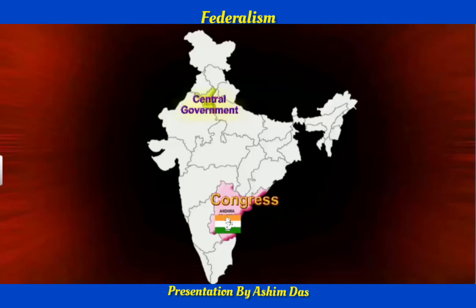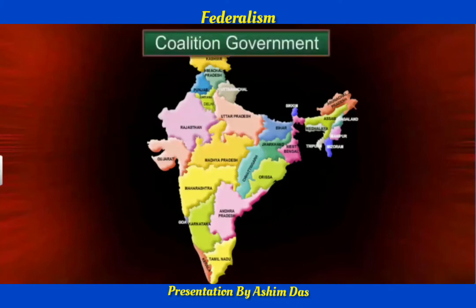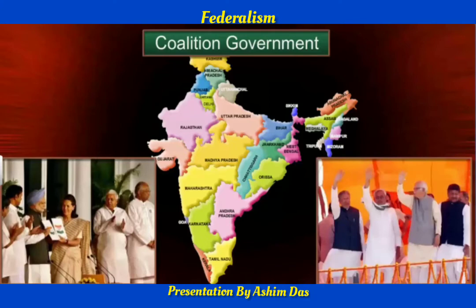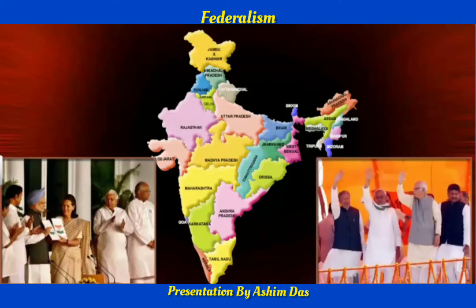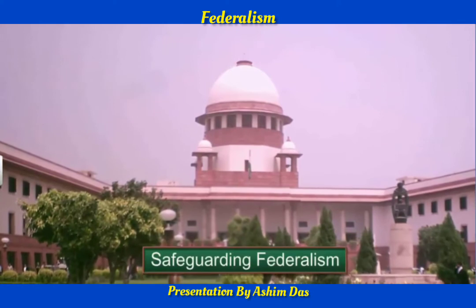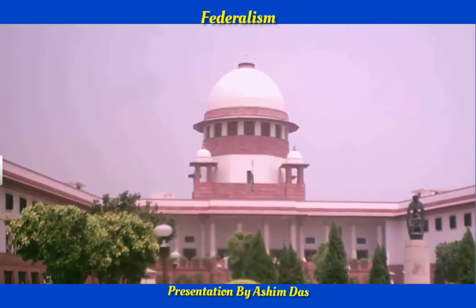After 1990, all this changed when a coalition government was formed at the center. Regional parties became more powerful in the states, and different parties formed alliances — for example, the UPA and the NDA. Under this arrangement, the culture of power sharing and respect for the autonomy of state governments spread in India. The Supreme Court also made it difficult for the central government to dismiss state governments in an arbitrary manner. As a result, with the era of coalition government, the federal structure is more effective today than it was when the constitution came into force.